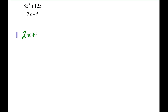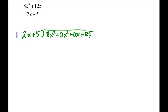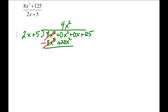So we set up our polynomial division: 2x plus 5 divided into 8x cubed — don't forget your placeholders — plus 0x squared plus 0x plus 125. Now we do our division: 2x goes into 8x cubed 4x squared times. So 4x squared times 2x is 8x cubed, and 4x squared times 5 is positive 20x squared. We subtract and those two terms subtract out, giving us negative 20x squared. Then we bring down the remaining terms to continue our long division.